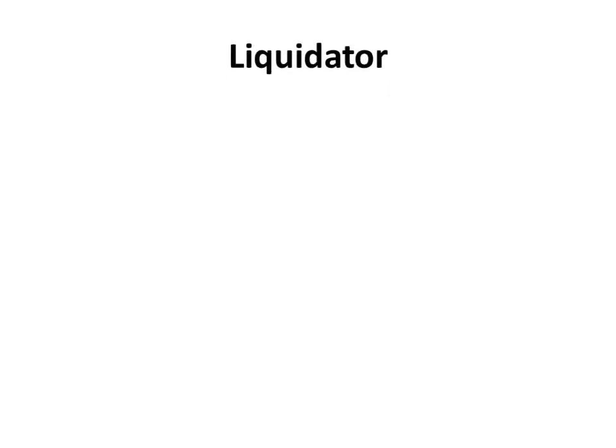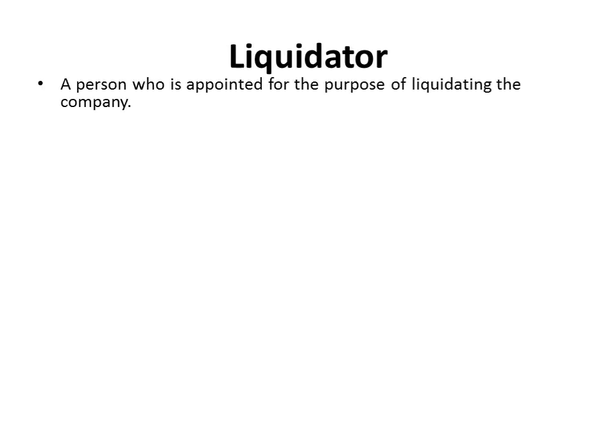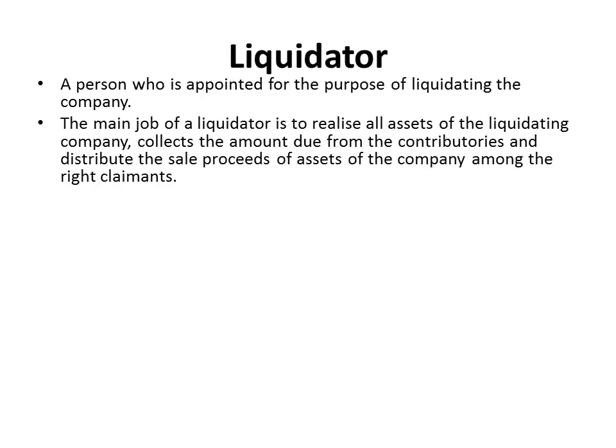Who is a liquidator? Simply, a liquidator is a person who is appointed for the purpose of liquidating the company. The main job of a liquidator is to realize all the assets of the liquidating company. Once the winding up order is issued, the liquidator will be appointed and he has to realize all assets of the liquidating company. Thereafter, he collects the amount due from the contributories.